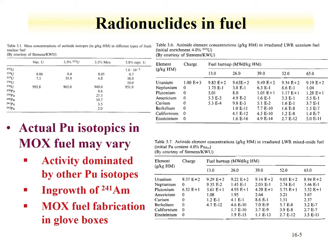Burn-up has an influence on the amount of radionuclides in fuel. The amount of actinides in fuel varies with burn-up depending on fuel composition - natural uranium, enriched uranium, or MOX fuel, which has an initial charge of plutonium. The initial amount of plutonium in the fuel influences the ultimate amount of actinides as a function of burn-up, particularly for americium, where there is notable ingrowth due to plutonium being present in MOX fuel.